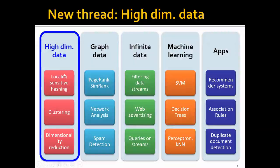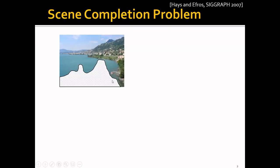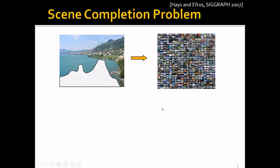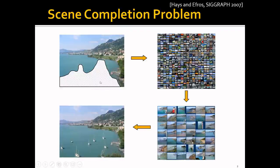Each item can actually be represented using a high-dimensional vector. So why do we want to find similar items? One interesting application is that if we're given an image with a very nice view, but unfortunately part of the view is occluded by the rooftops, you really want to complete the view. One thing you can do is find from a large collection of images in a database some nearest neighbors of this image, and manually select the one which looks most similar, and use that image to complete the view. This is called a scene completion problem.